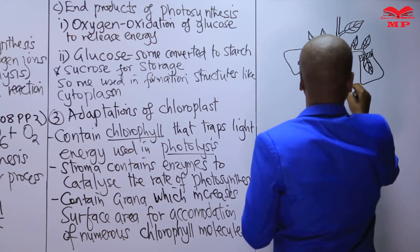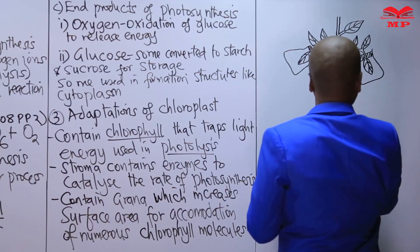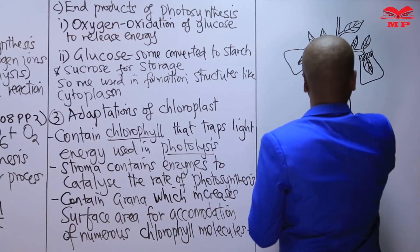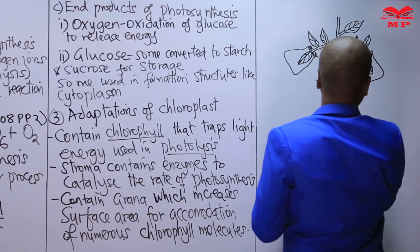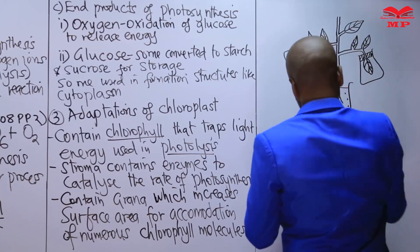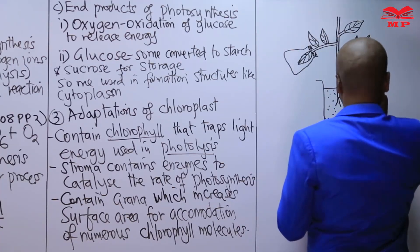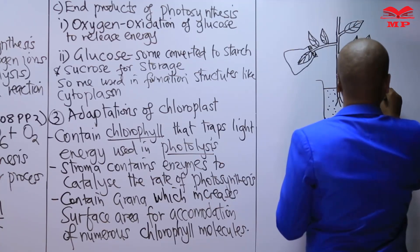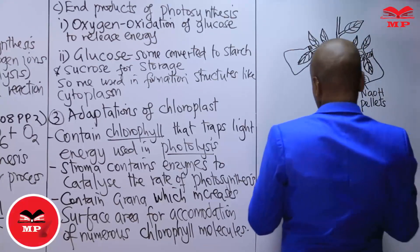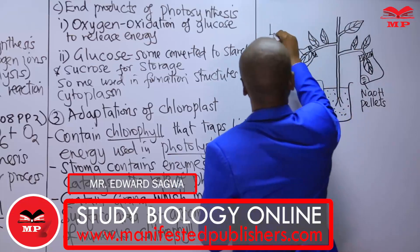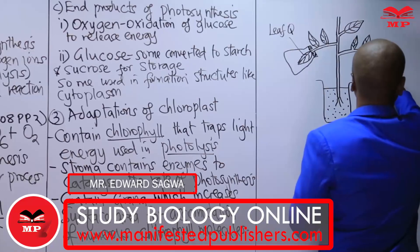This plant is potted, so it is now containing some soil. Inside here, they have placed sodium hydroxide pellets. This is leaf Q, and this is leaf P.